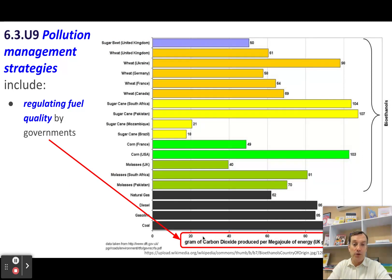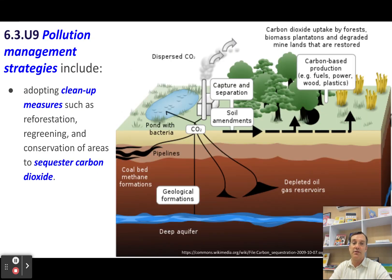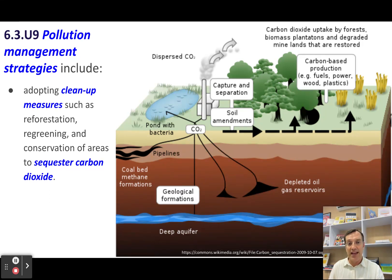We can also regulate fuel quality — looking at the carbon content of different fuel sources, and using those to generate more or less electricity or to fuel vehicles that run on ethanol or something like that. Then there's tier three, which is just cleaning up — not necessarily inventing something that will extract the pollutants directly from the atmosphere.